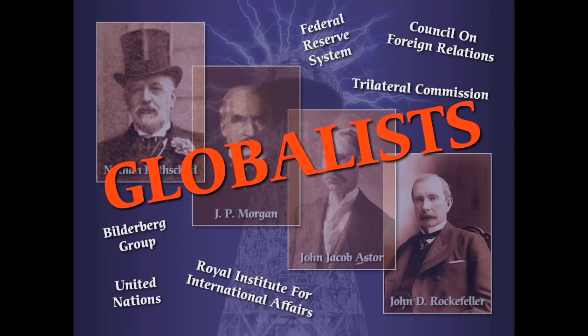Morgan, Astor, and Rockefeller were what I would call — and many other researchers would call — agents of the Rothschild dynasty: this entrenched and foreign banking dynasty that ultimately controls the central banks of the world, including the Federal Reserve System here in the United States. These are also very influential people who paved the way for things like the United Nations, the Royal Institute for International Affairs, the Council on Foreign Relations, the Trilateral Commission, and the Bilderberg Group. I want to get into Morgan's influence in changing the way publishing houses printed information, and how influential the Rockefellers are in the modern day in publishing modern textbooks.